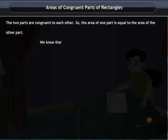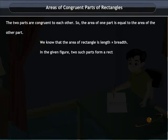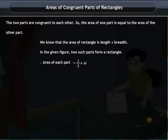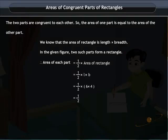We know that the area of a rectangle is length into breadth. In the given figure, two such parts form a rectangle. The area of each part is equal to 1/2 into the area of the rectangle. Substituting the values and simplifying, the area of each part is equal to 12 cm squared.